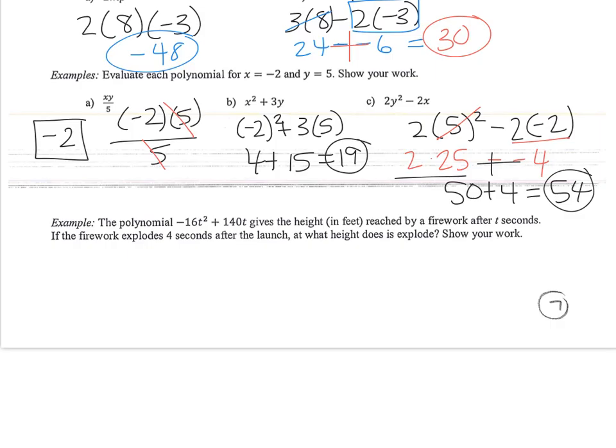And the last one, the polynomial negative 16t squared plus 140t gives the height in feet reached by a firework after t seconds. If the firework explodes 4 seconds after the launch, at what height does it explode? So we're trying to find the height. So the height is equal to this expression. But we know the firework explodes 4 seconds later. So let t equal 4.